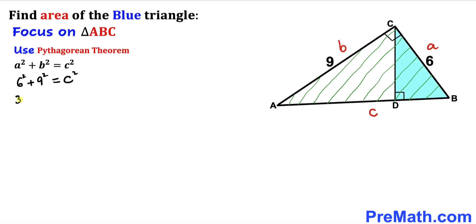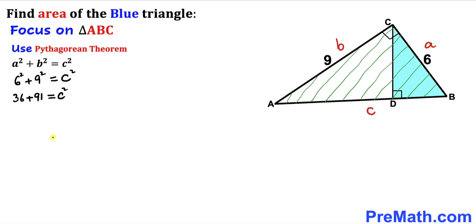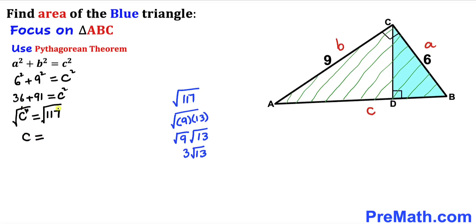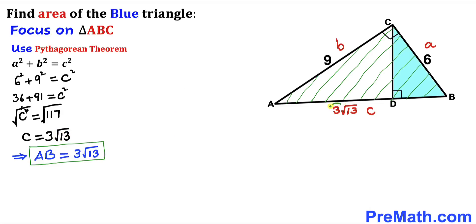So we get 36 plus 81 equal to C², which means C² equals 117. Taking the square root on both sides, C turns out to be equal to 3 times the square root of 13. So therefore our side length AB turns out to be 3√13 units.